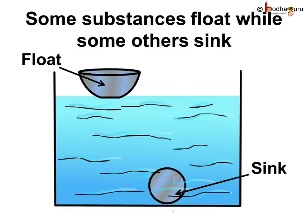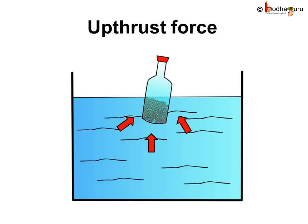If it goes under the water, we say it has sunk. Whenever a body is immersed in liquid downwards, it experiences a force from that liquid in the opposite, that is upward, direction. For example, this bottle is immersed in water. The water has a pressure that pushes the bottle up. If the water's upward push is greater than the bottle's weight, the bottle will float. If the bottle is heavier than the water's thrust, the bottle will sink.